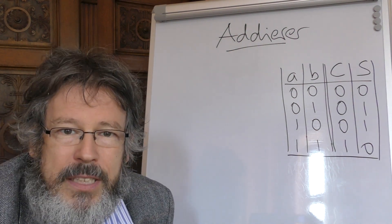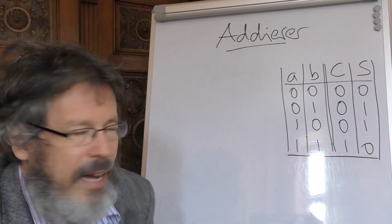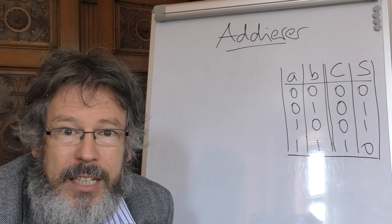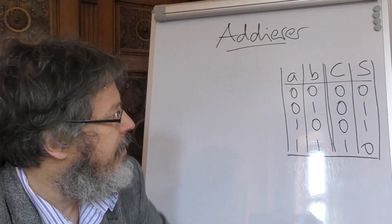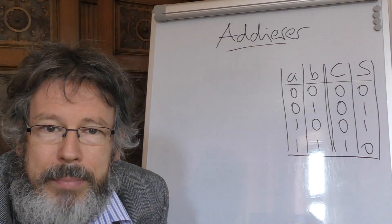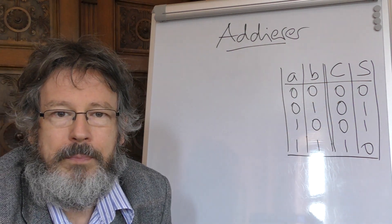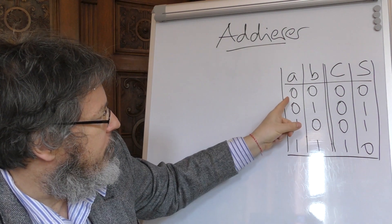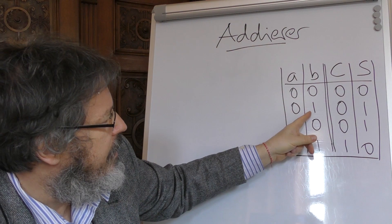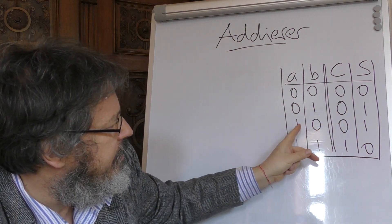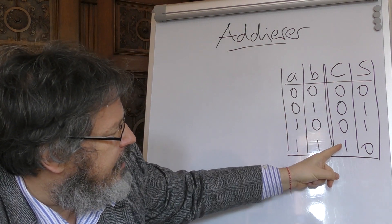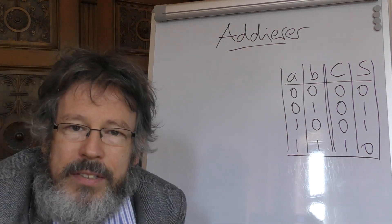Natürlich nicht, denn der schlimmste Fall ist, wenn beide Bits 1 sind. 1 plus 1 ist 2. 2 lässt sich aber nicht mehr mit einer Stelle darstellen im Binärsystem, also brauchen wir zwei Stellen. Die haben wir hier in dieser Tabelle. Die letzte Stelle nennen wir Summen-Bit, die erste Stelle Übertrags-Bit. Und dann haben wir also 0 plus 0 ist Übertrags-Bit 0, Summen-Bit 0. 0 plus 1 ist Übertrags-Bit 0, Summen-Bit 1. Dasselbe hier, 1 plus 0 ist 1. Und 1 plus 1 ist eben 2. Das Carry-Bit wird eine 1, das Summen-Bit wird eine 0.